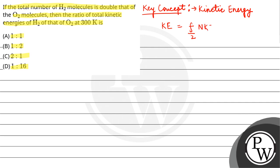And KT, where F is the degree of freedoms, N is the number of molecules, K is the Boltzmann constant, T is the temperature. So now...